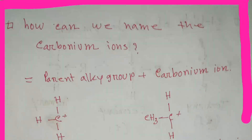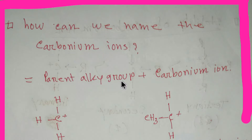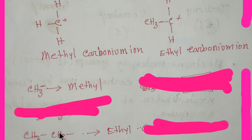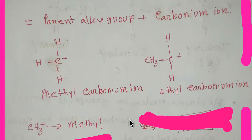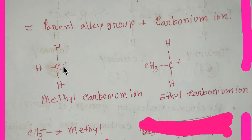Now, how can you name the carbonium ions? To name them, we just add 'carbonium ion' after the parent alkyl group. If you remove hydrogen from an alkane, you get the corresponding alkyl group — from methane you get the methyl radical, from ethane you get the ethyl radical. If you put a positive charge on carbon in the methyl radical, you get the methyl carbonium ion, and similarly the ethyl carbonium ion.